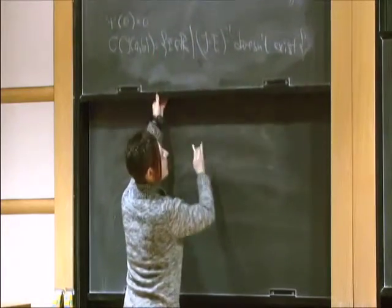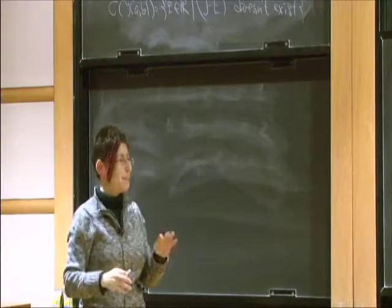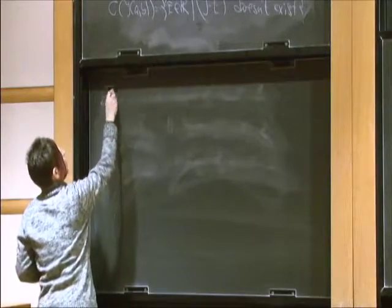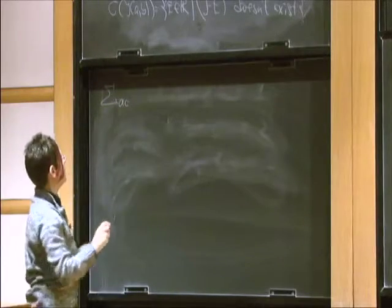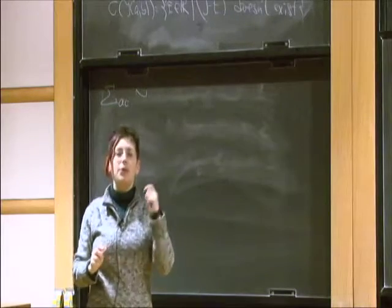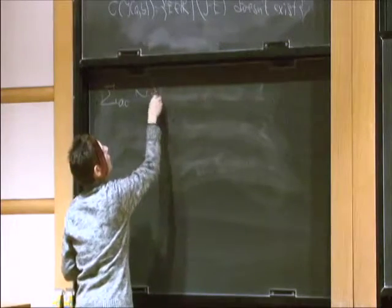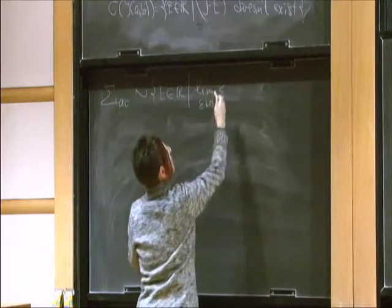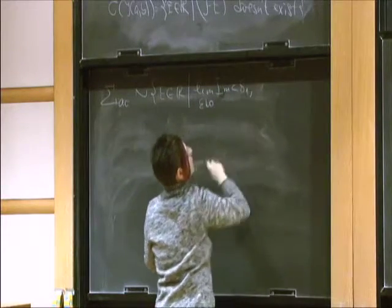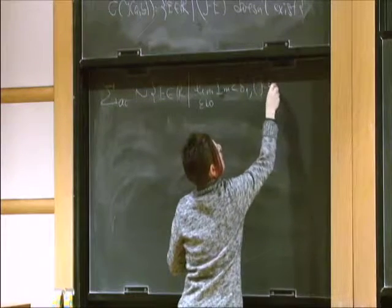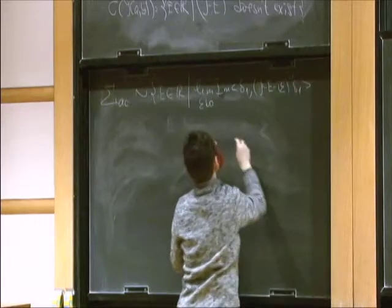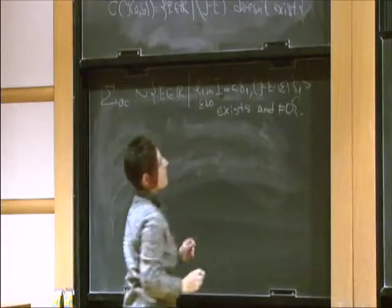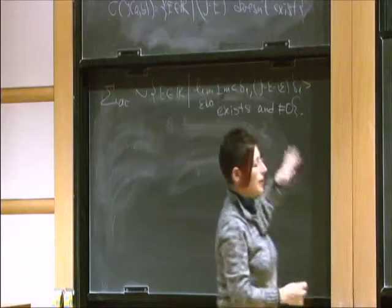The essential support of the absolutely continuous spectrum — which at some point I will just call the spectrum — usually denoted Σ_{AC}, is defined as an equivalence class up to sets of zero Lebesgue measure of the set of all real energies E for which the limit as ε → 0 of the imaginary part of ⟨δ₁, (J − E − iε)⁻¹ δ₁⟩ exists and differs from zero. This is my setup.